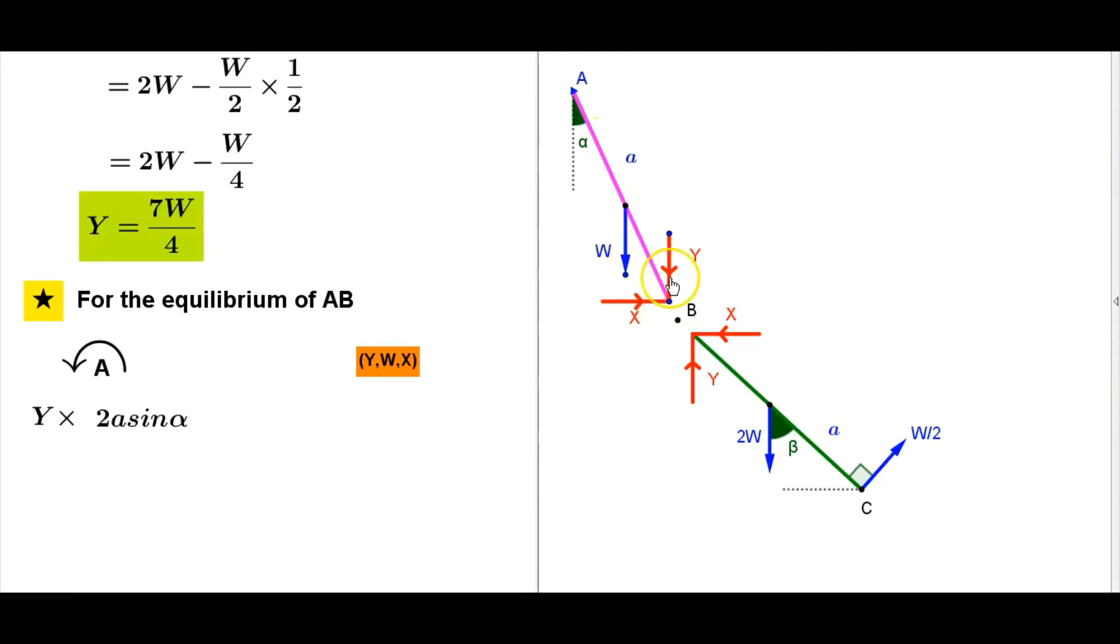2a sin alpha times Y plus W times distance from here to W, that is a sin alpha, minus X times the distance from here, this distance 2a cos alpha. X times 2a cos alpha equals 0.